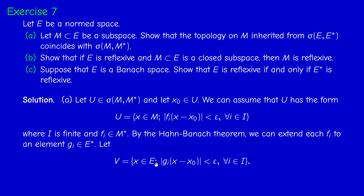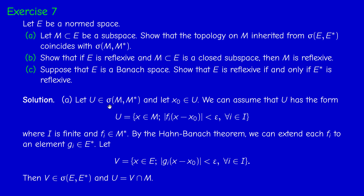Therefore, if we let V be the same set as U but with Gi instead of Fi, V is weakly open in the weak topology of E, so it belongs to sigma(E, E*). And U is just the intersection of V and M — this is basic set theory. So we started from an element in the weak topology of M and showed it is a set in the subspace topology inherited from sigma(E, E*).